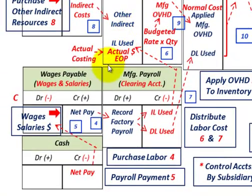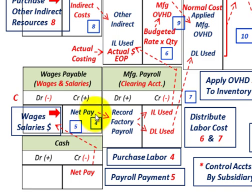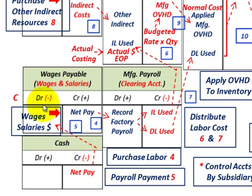Now step four, where labor costs come in. We purchase labor under wages payable — we credit wages payable for the net pay amount, and that amount is debited to a manufacturing payroll clearing account, where we record the factory payroll. Then for step five, we make payments on this payroll: we credit cash for the net pay and debit wages payable to remove it from the books.